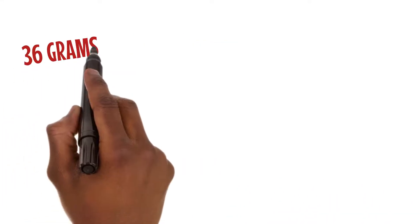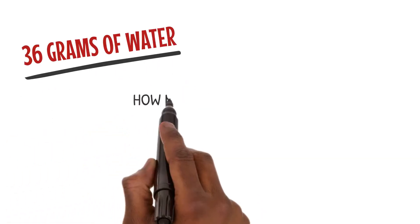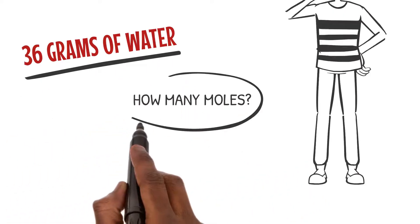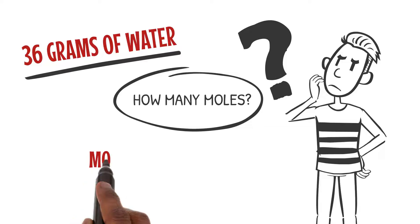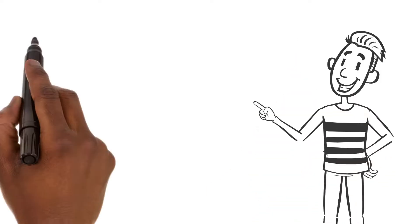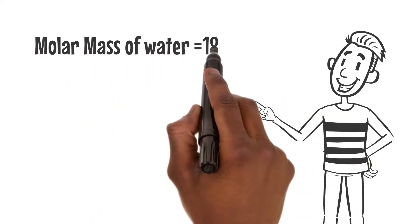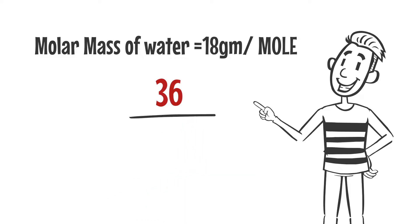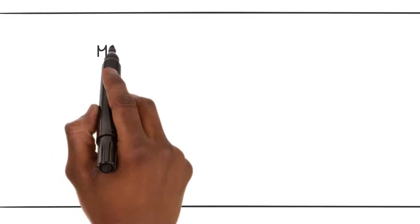Imagine we have 36 grams of water. How many moles of water do we have? We can use our formula: moles = mass / molar mass. The molar mass of water is 18 grams per mole, so 36 grams divided by 18 grams per mole gives us two moles of water.